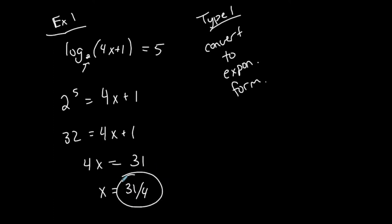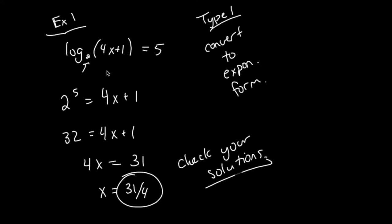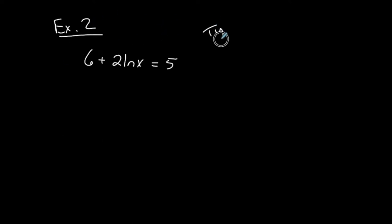Before claiming it's a solution, check that plugging it in doesn't give a negative or zero. If I plug in positive 31/4, I get a positive number here — no problem. So 31/4 is my solution. You can always plug it in to verify that the left side equals the right side.